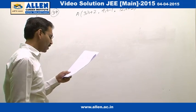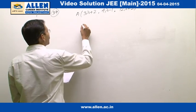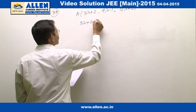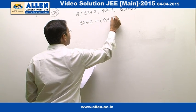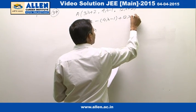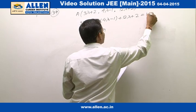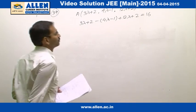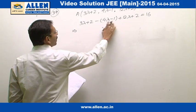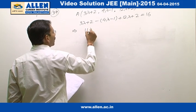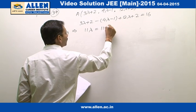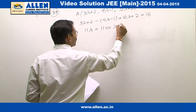I will substitute this point in the plane equation: x minus y plus z equals 16. Simplifying: negative lambda plus 12 lambda is 11 lambda, and 3 plus 2 is 5, so 11 lambda plus 5 equals 16, giving us 11 lambda equals 11, therefore lambda is 1.